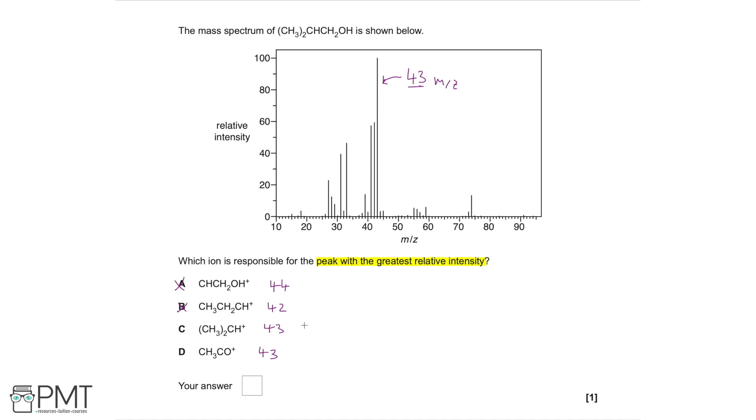The best thing to do here is to draw these ions to see if they could feasibly be formed during the breakdown of our original molecule. So let's draw our original molecule and also draw ions C and D.